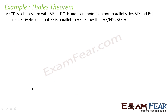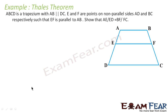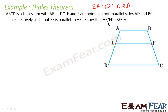Let us take one more example. ABC is a trapezium with AB parallel to DC. E and F are points on non-parallel sides AD and BC respectively, such that EF is parallel to AB. Prove that AE by ED is equal to BF by FC. Let us have this trapezium. This is trapezium ABCD with AB parallel to DC. E and F are two points on the non-parallel sides, such that EF is parallel to DC — because EF is parallel to AB means EF is parallel to DC also. We have to prove that AE by ED is equal to BF by FC.